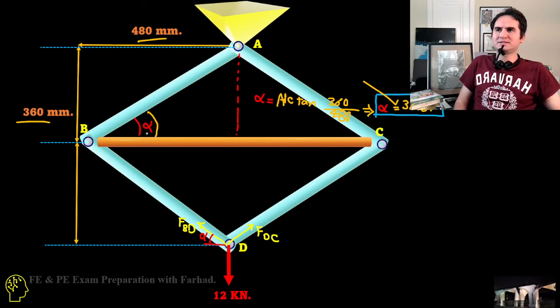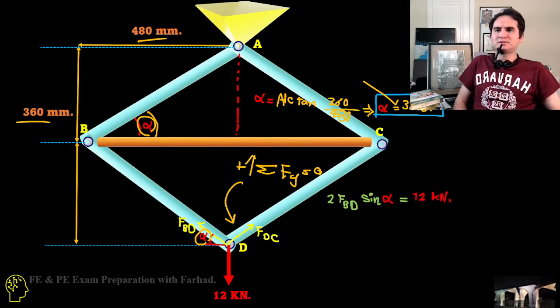If that's alpha, this is alpha two. Let's write down sigma Fy equals zero for point D, point of interest. Due to symmetry, we can easily say all the forces of members are identical to each other due to the symmetry of the structure.